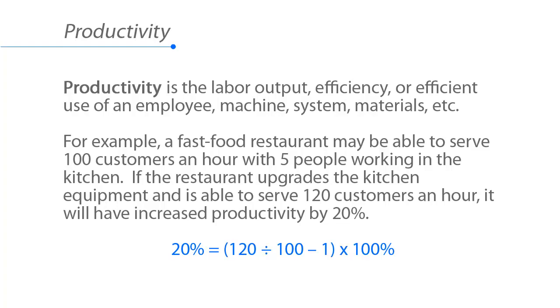So, 120 divided by 100 is 1.2. 1.2 minus 1 is .2, and then we multiply that by 100%, and that gives us 20%.